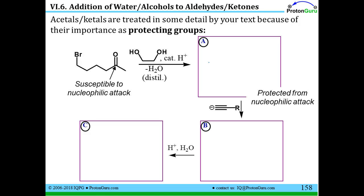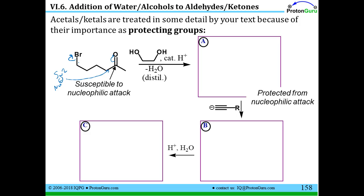The fact that this reaction is so reversible has led scientists to use these ketals or acetals in what are called protecting groups. Let's say you are a scientist and you want to do a nucleophilic attack — say an SN2 reaction — and have a nucleophile attack and push a bromine off. If you also have a carbonyl in this molecule, your nucleophile is probably going to do whichever reaction it comes closest to first: either the SN2 at that carbon, or nucleophilic addition to the carbonyl carbon. How do you get one specific reaction out of two possible reactions?